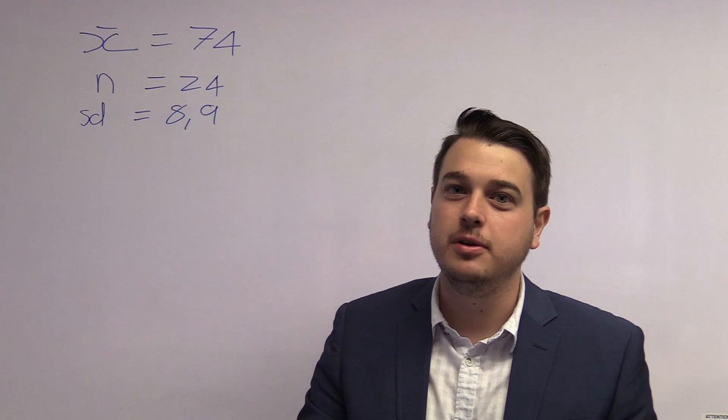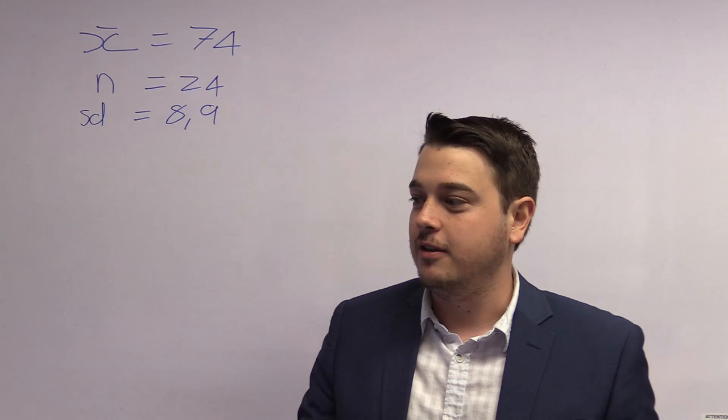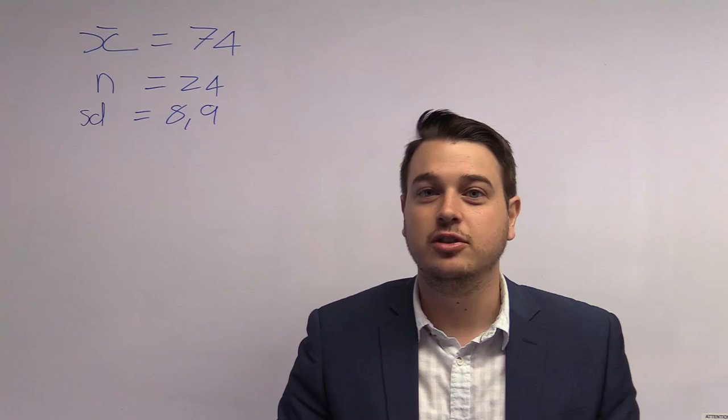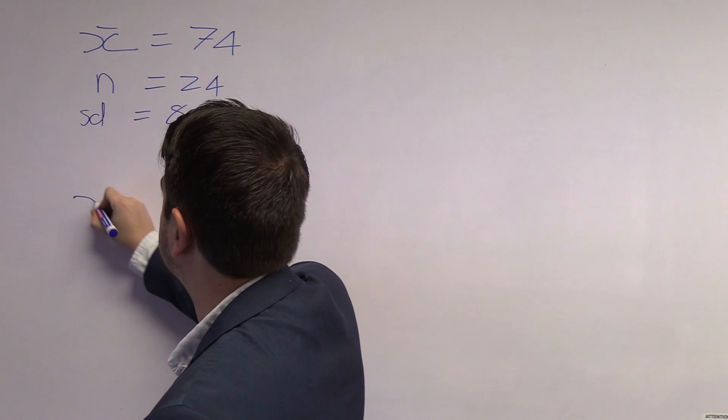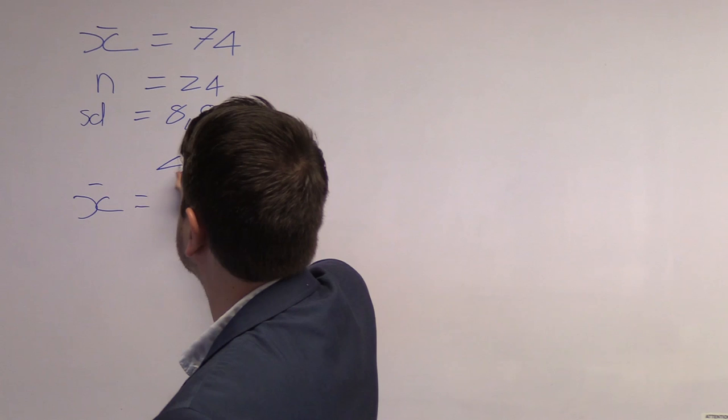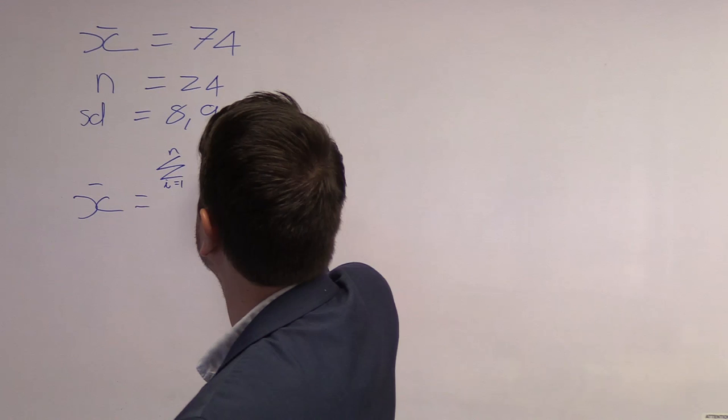Question B asks: what is the new average? To calculate the average we use the formula x̄ equals the sum of xi from i equals 1 to n, divided by n, where x̄ is the average, the sum of all marks divided by the total number of marks.